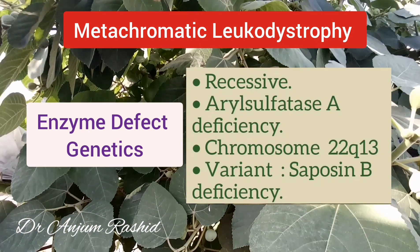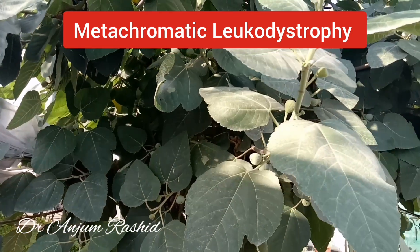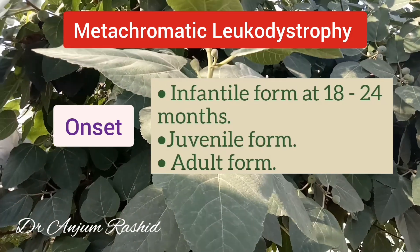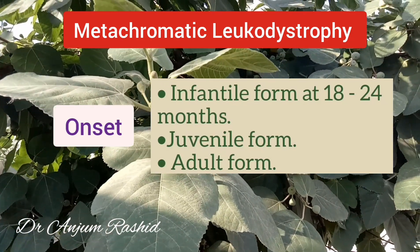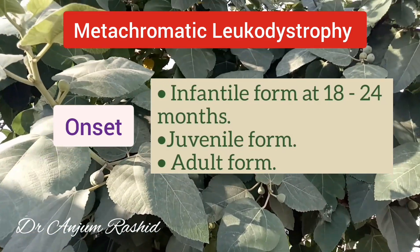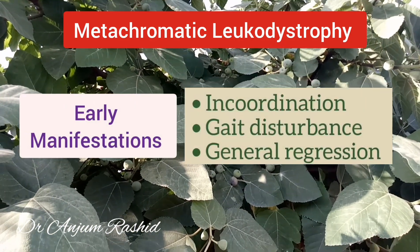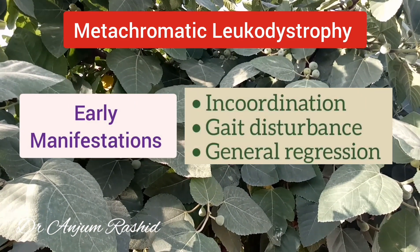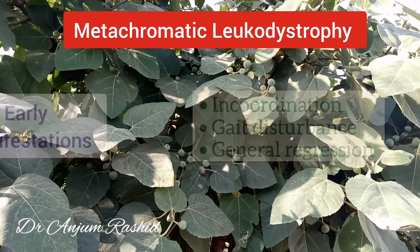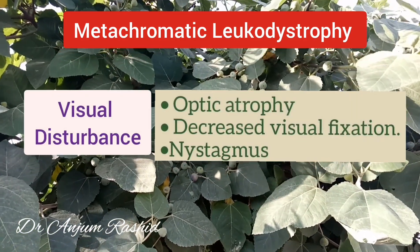There is a variant which is due to deficiency of saposin B. Regarding onset, the most common form is the infantile form, which usually begins at 18 to 24 months of age. However, there are also juvenile and adult forms. Early manifestations include incoordination, gait disturbance, and general developmental regression.